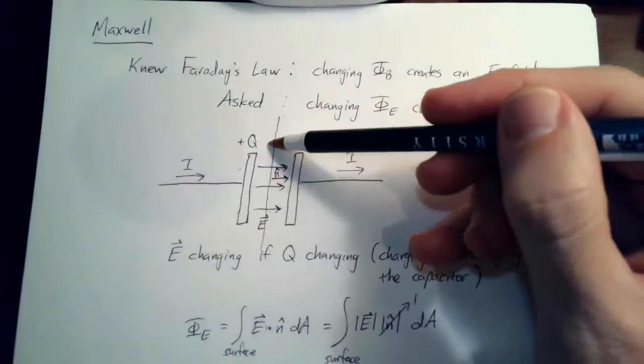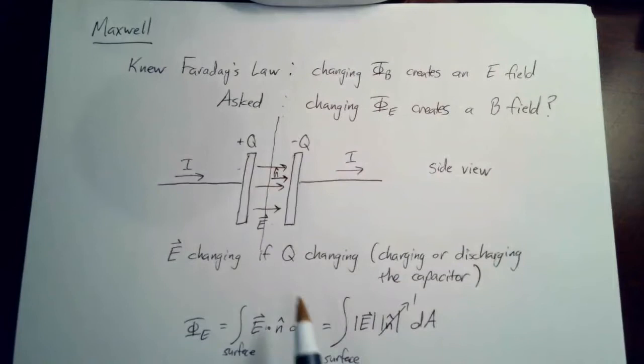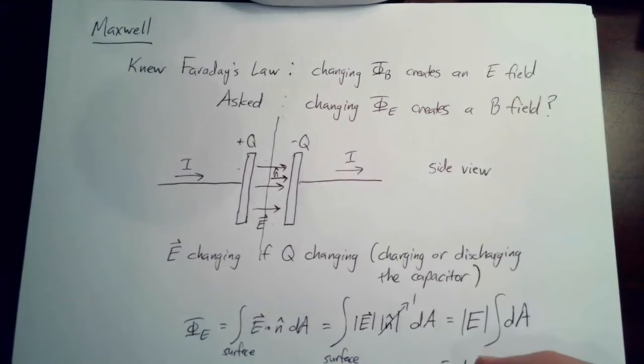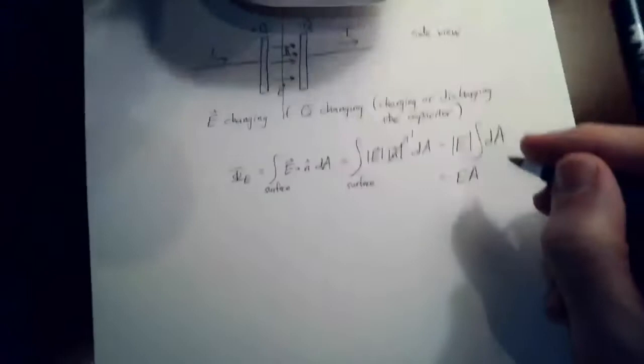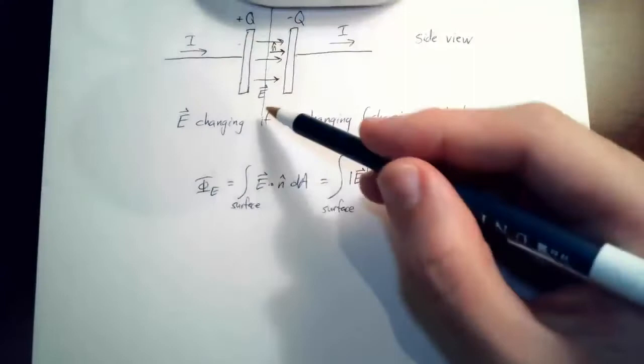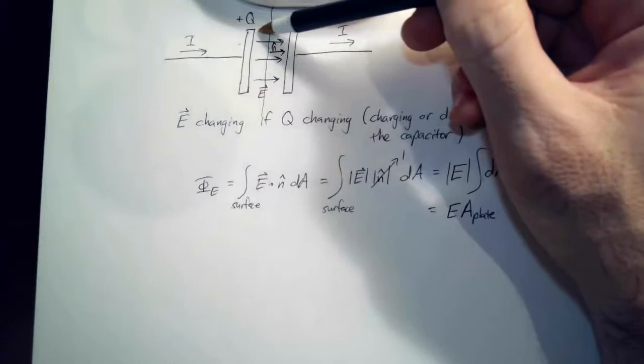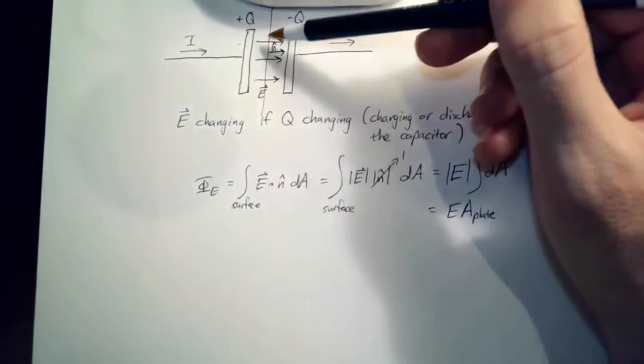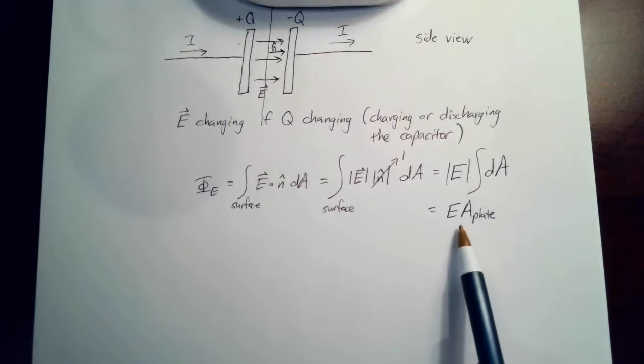The electric field is uniform inside between the plates, so it doesn't vary over the surface and I can take it out of the integral. Assuming negligible electric field outside the plate areas, the flux is contributed only between the plates — so the electric flux equals the electric field times the area of the plate.